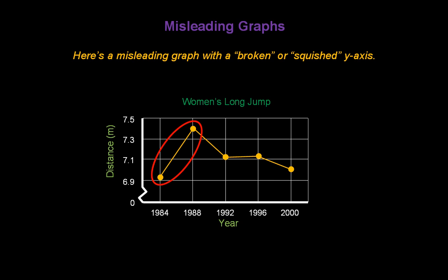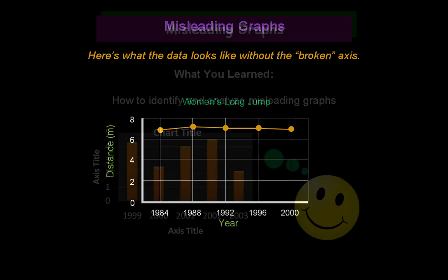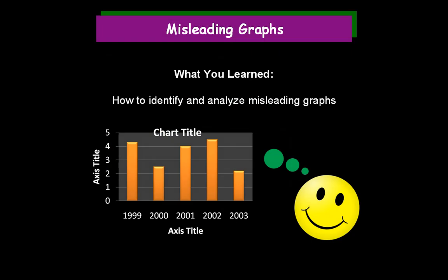If we made this graph without the squished axis, starting at zero, it would look like this. Yes, there is a difference between 1984 and 1988, but it's not as dramatic as the misleading graph made it look. Congratulations! You've now learned how to identify and analyze misleading graphs.